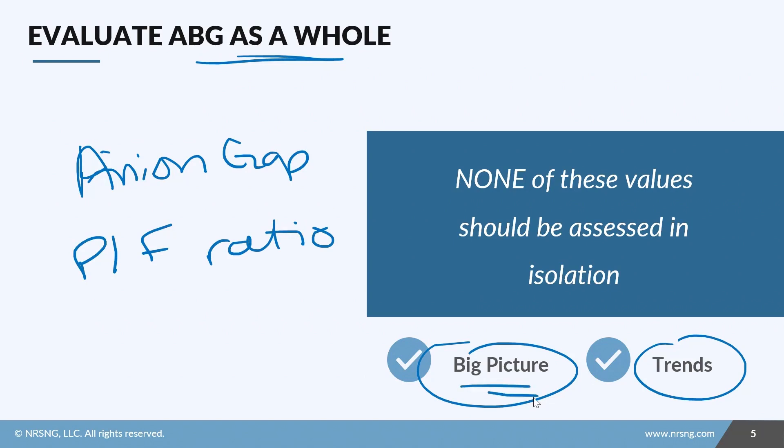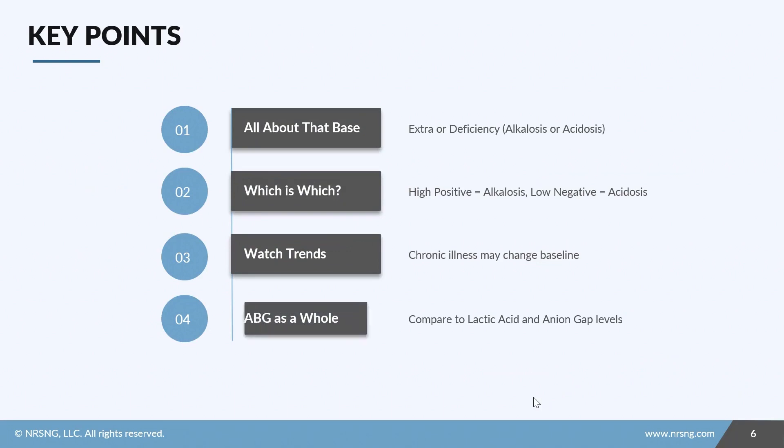Let's recap. Remember that base excess is all about the extra or the deficiency of base in our bloodstream. Extra base is alkalosis, deficiency is acidosis. Remember that extra base would give you a high positive or an alkalosis, and deficiency in base would give you a low negative or acidosis.